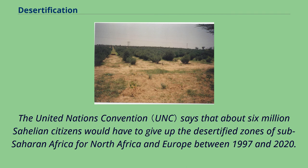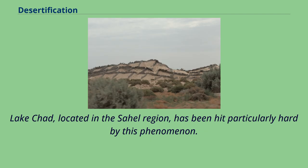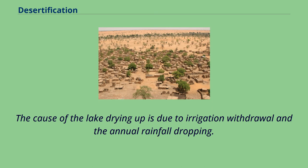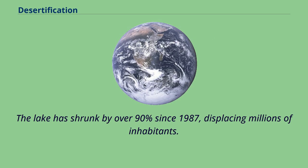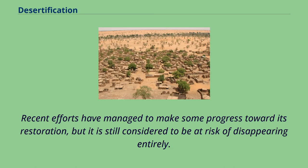The United Nations Convention says that about 6 million Sahelian citizens would have to give up the desertified zones of sub-Saharan Africa for North Africa and Europe between 1997 and 2020. Lake Chad, located in the Sahel region, has been hit particularly hard by this phenomenon. The cause of the lake drying up is due to irrigation withdrawal and the annual rainfall dropping. The lake has shrunk by over 90% since 1987, displacing millions of inhabitants. Recent efforts have managed to make some progress toward its restoration, but it is still considered to be at risk of disappearing entirely.